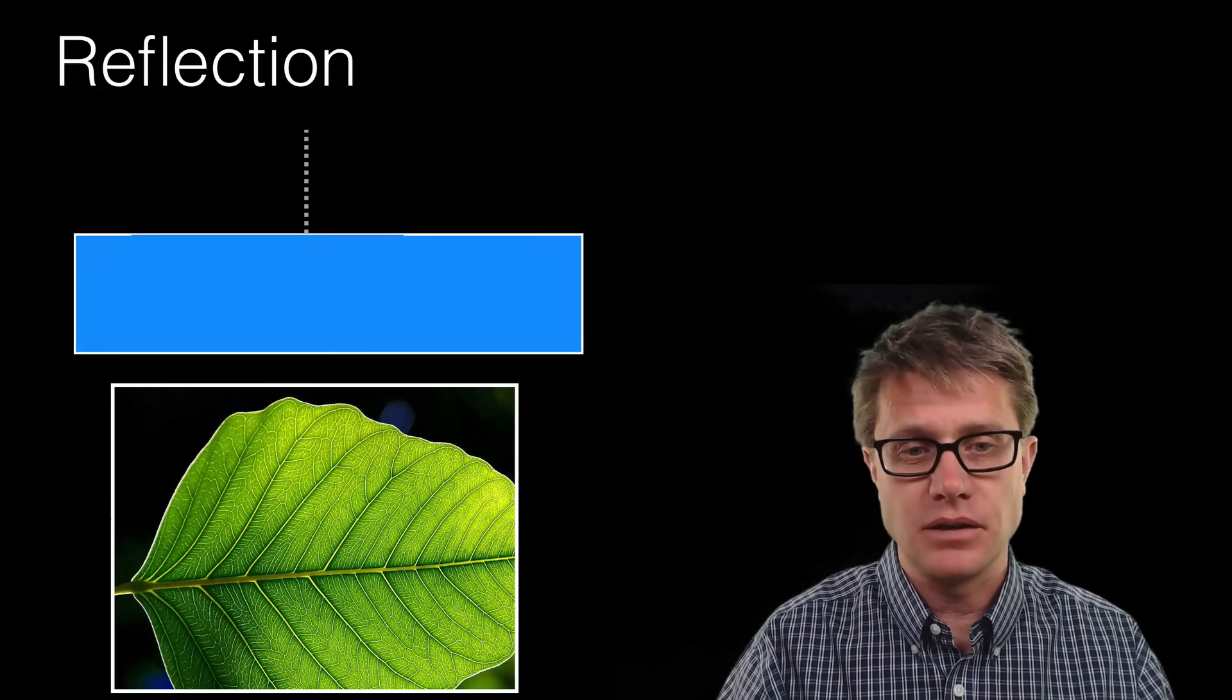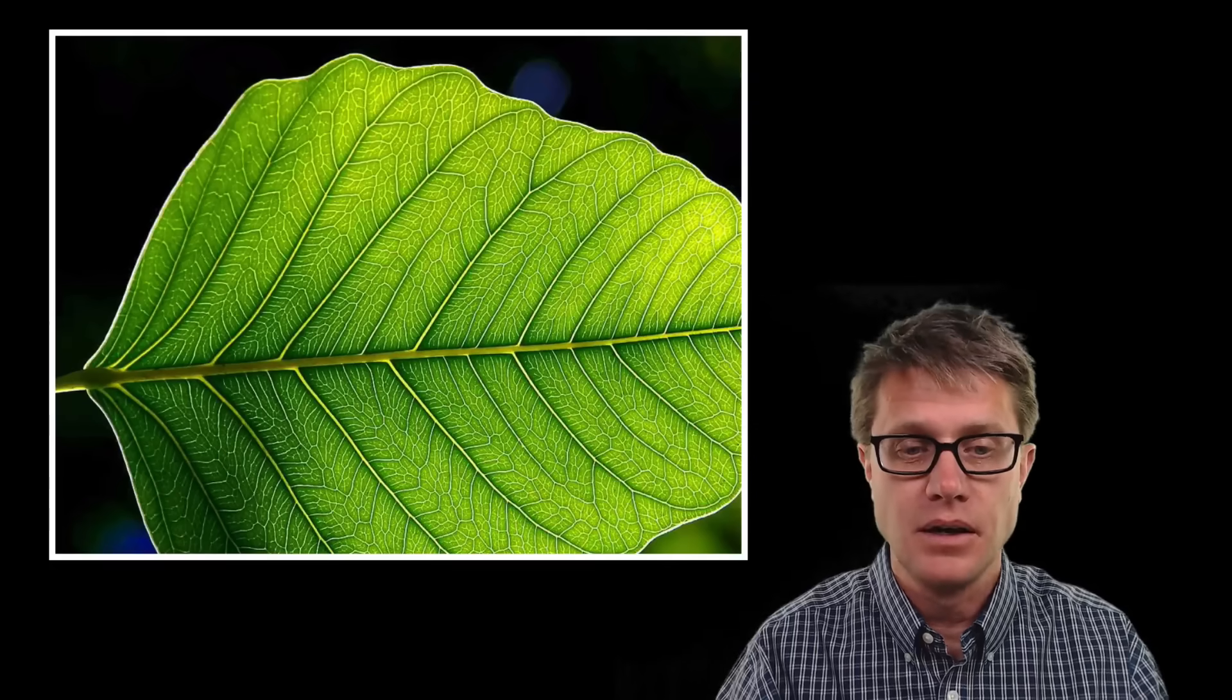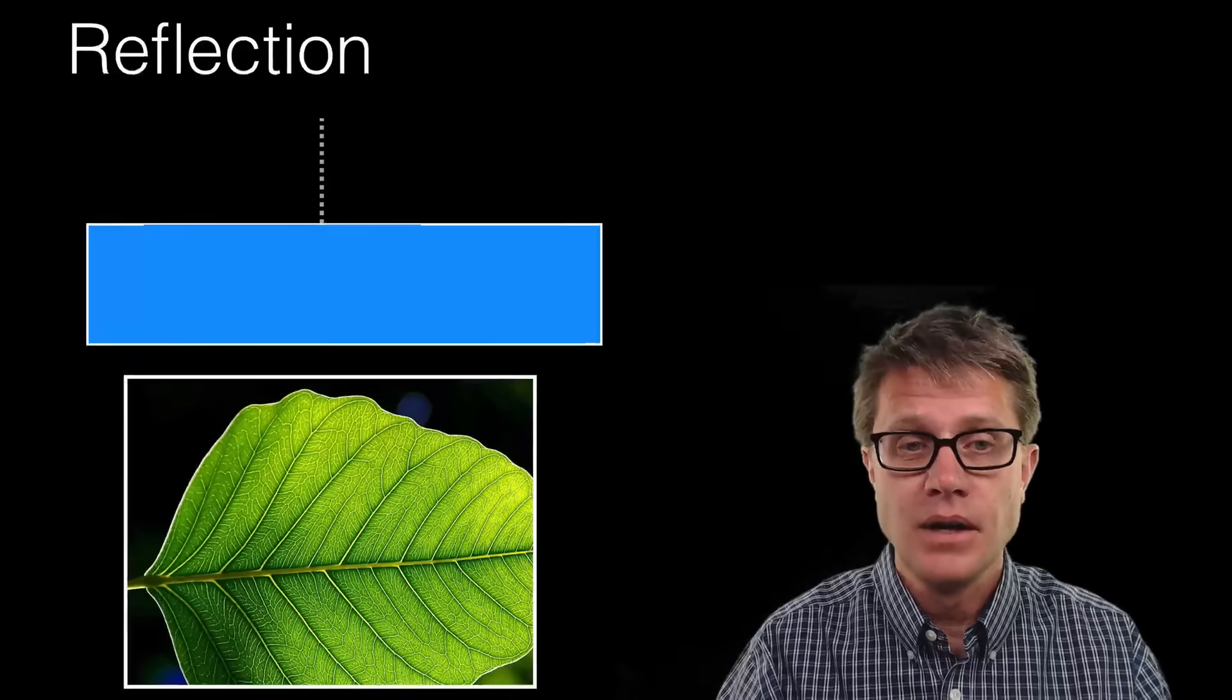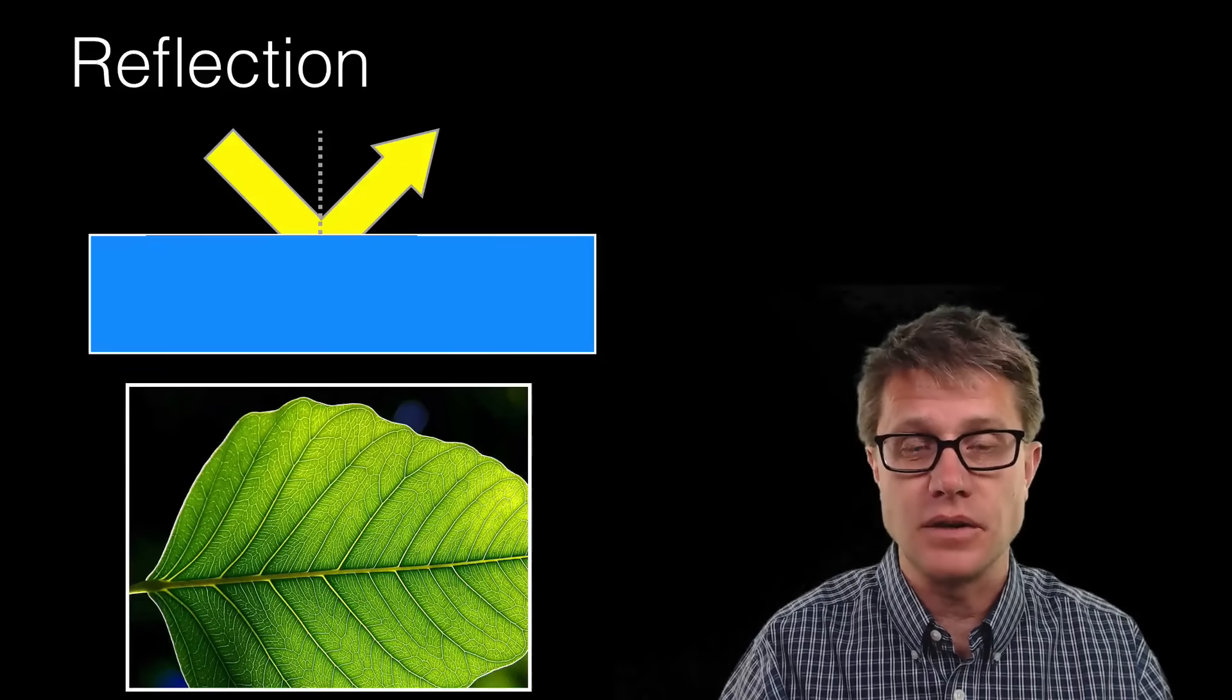So let's start with reflection. If we were to look at this leaf, what color of light is being reflected from the surface of the leaf? Well, it's green. Since it appears as green, we're getting a reflection of that green light. So reflection is a bounce off of the surface.